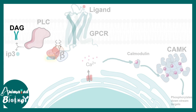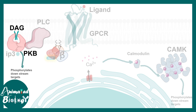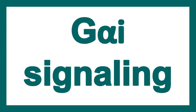Diacylglycerol (DAG) is another second messenger that can bind to protein kinase C, which can further phosphorylate several downstream targets.